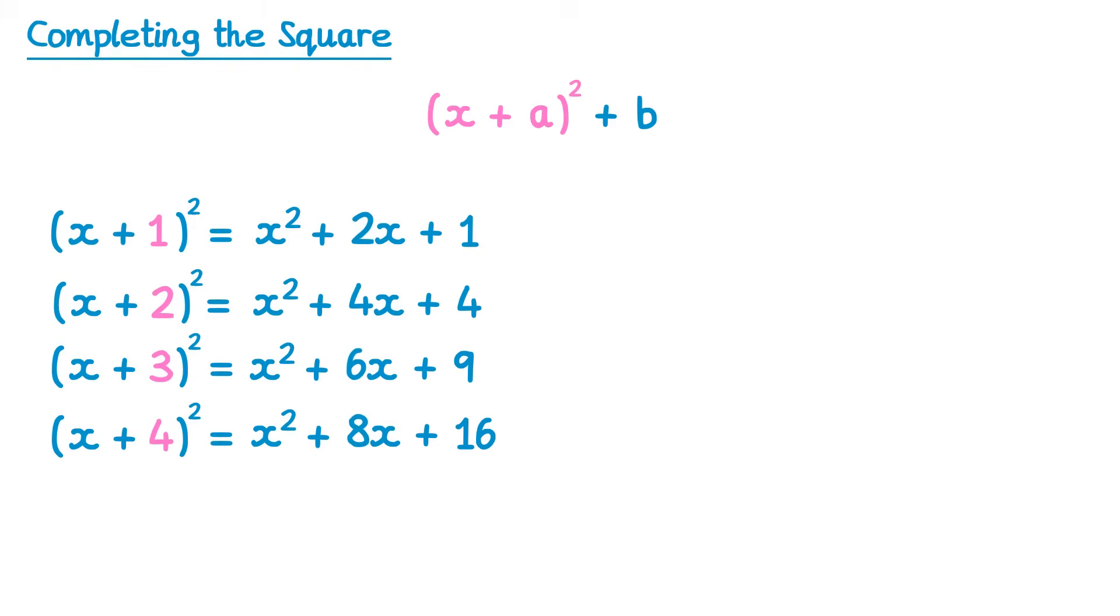It's also possible to get the number at the end very quickly. Take the number in the brackets and square it. So 1 squared is 1, 2 squared is 4, 3 squared is 9, and so on.